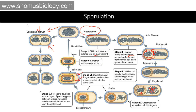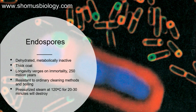Then the spore will be released by cracking the mother cell open. Once the spore is released, the spore will germinate — meaning the spore is now converted into a vegetative cell. That cell will then undergo the process of vegetative cell growth, and the normal process of binary fission will continue.